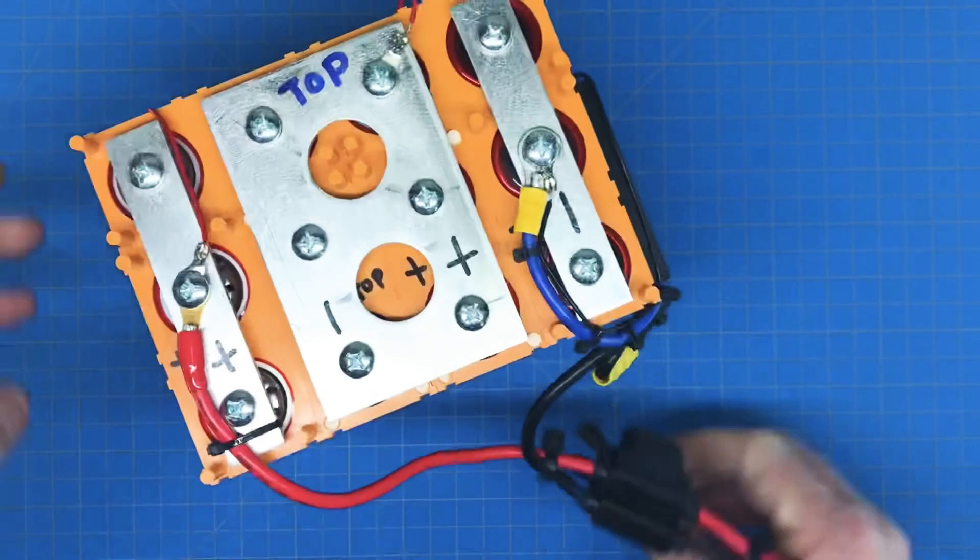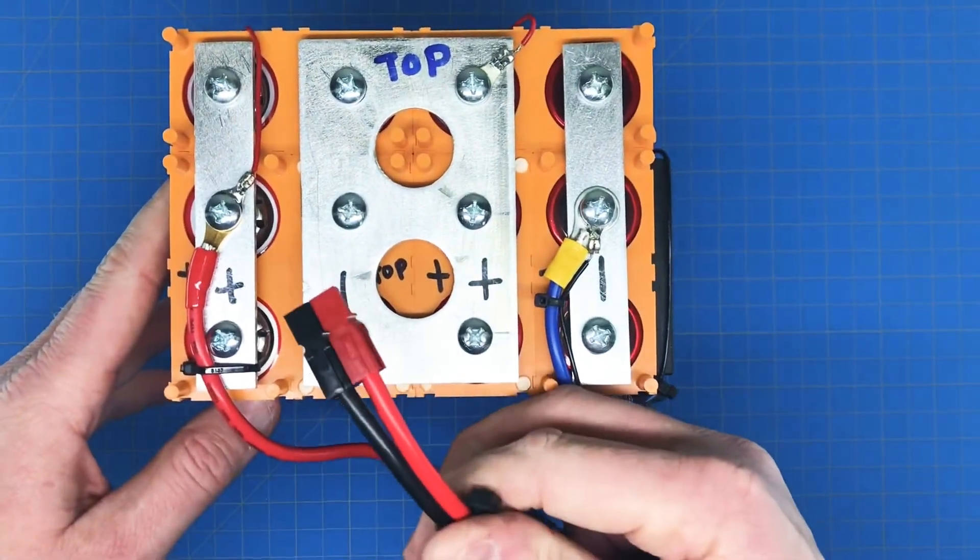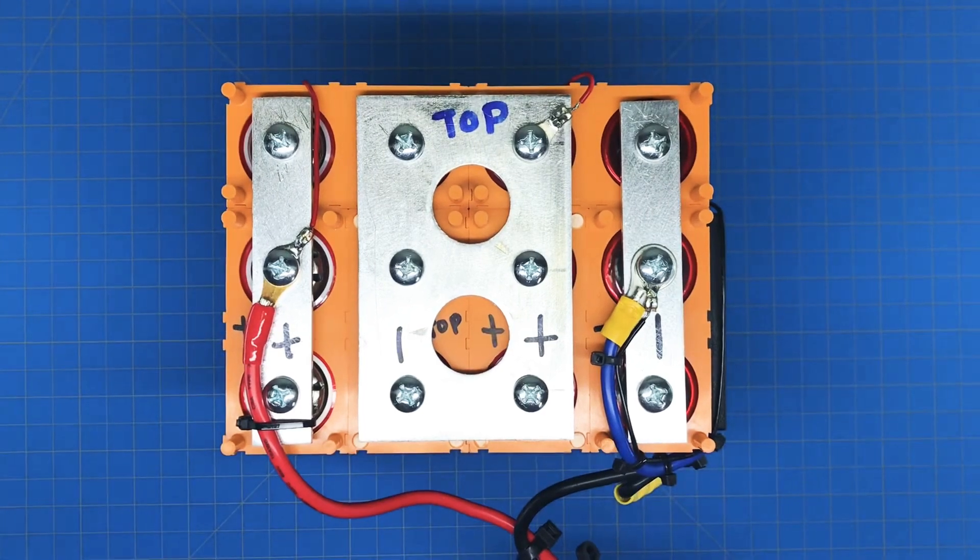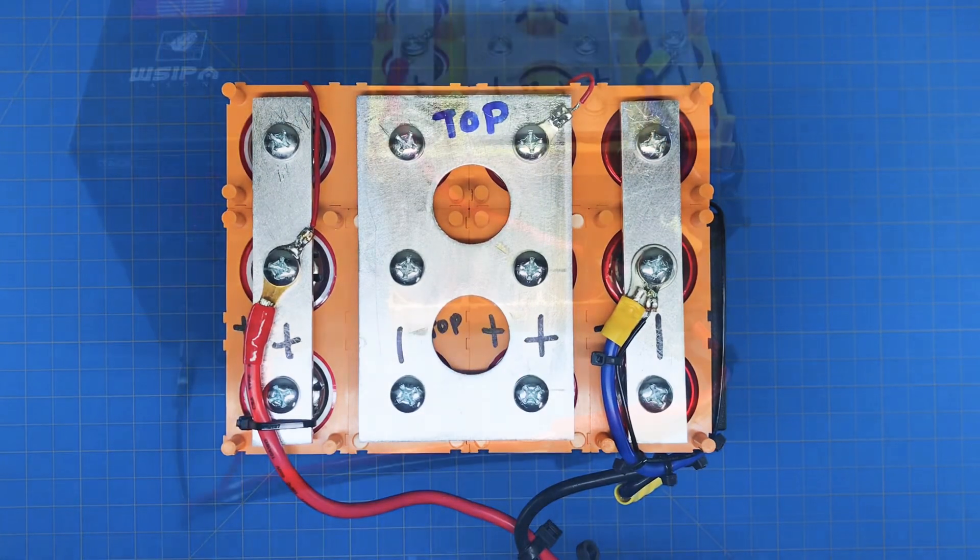The next step is we're going to charge it through the added power pole and then run it through its capacity check to see how close we got to the calculated capacity.